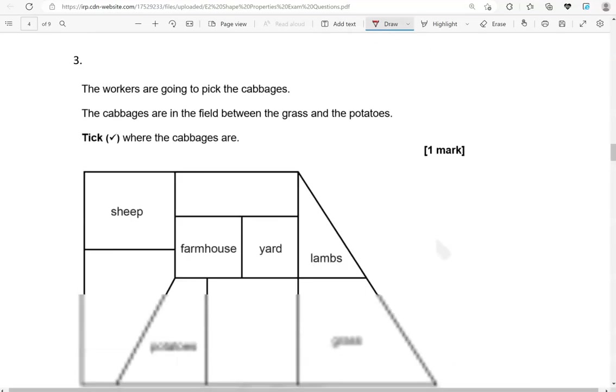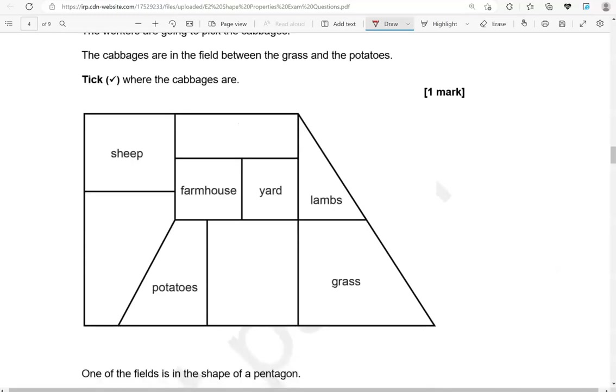The workers are going to pick the cabbages. The cabbages are in the field between the grass and the potatoes. Tick where the cabbages are. Between the grass and the potatoes, that's this one here.